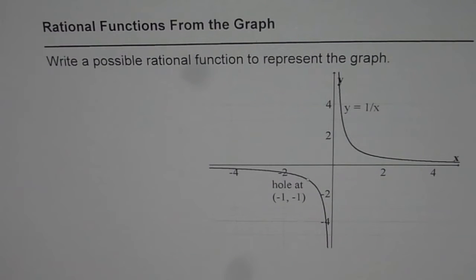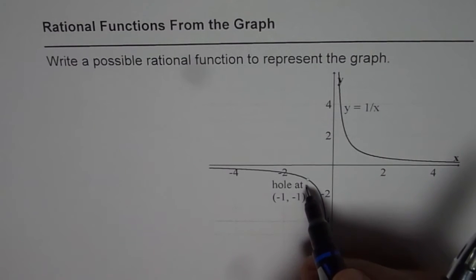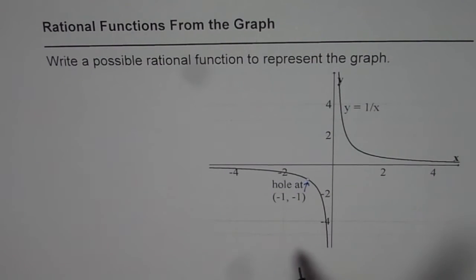So we have a hole at this point where the coordinates are (-1, -1). So you need to write a rational function to represent this graph.